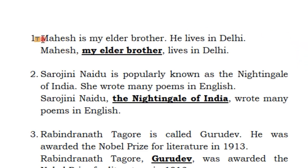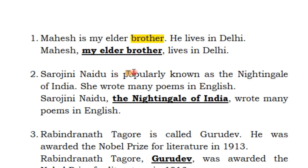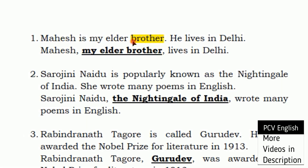For example: 'Mahesh, my elder brother, he lives in Delhi.' This is the noun phrase in apposition. 'My elder brother' is the noun phrase in apposition to 'Mahesh.' 'My elder brother' has the function of occasional modification — it is a noun phrase in apposition.